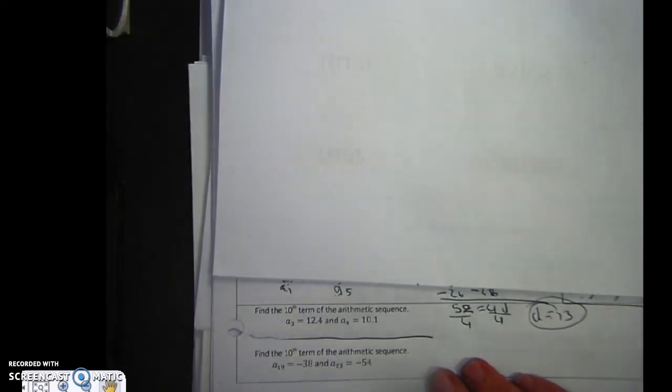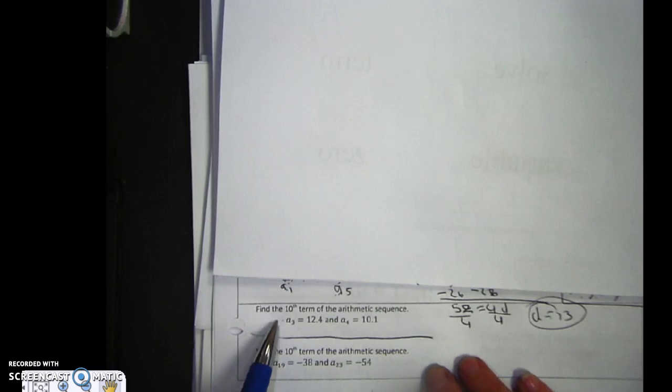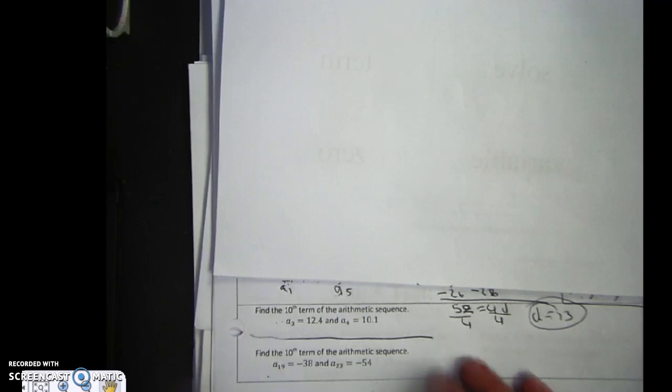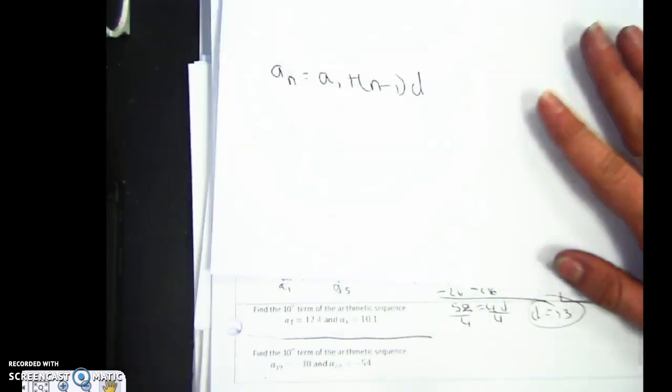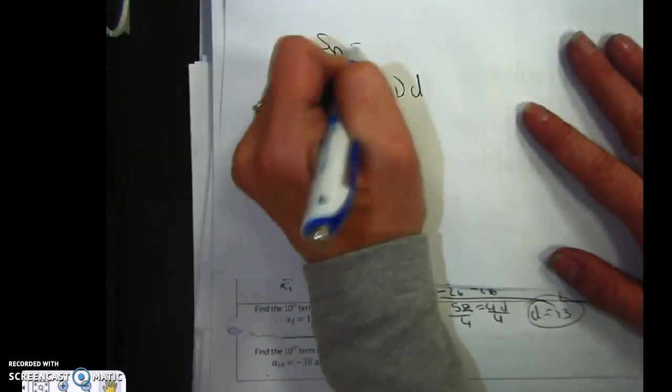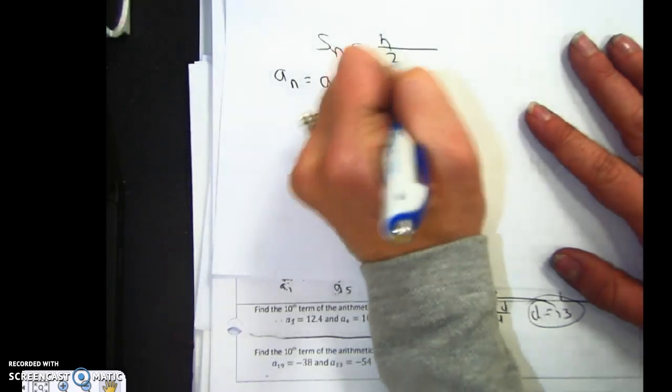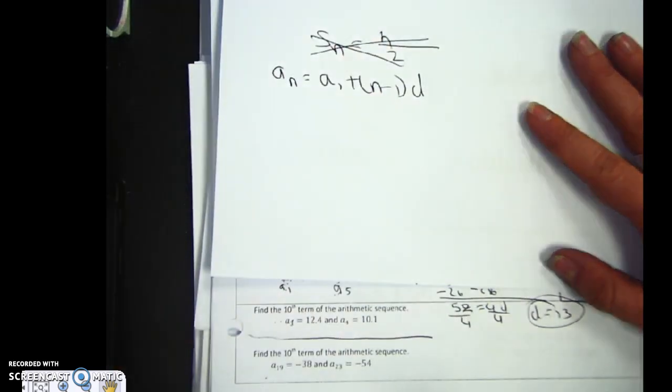I'm going to finish out the last page. These are two separate questions. I want you to find the 10th term of this one and find the 10th term of this one. So it's arithmetic. The first thing I'm going to do is write a sub n equals a1 plus n minus 1 times d. I'm not finding the sum.